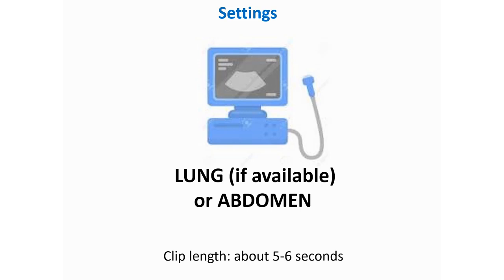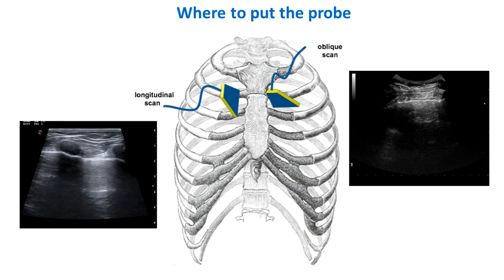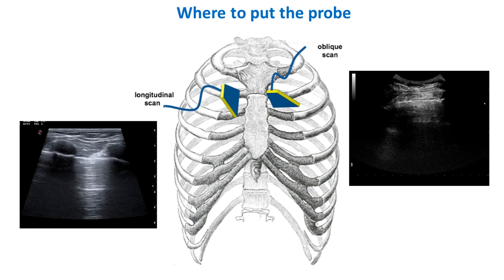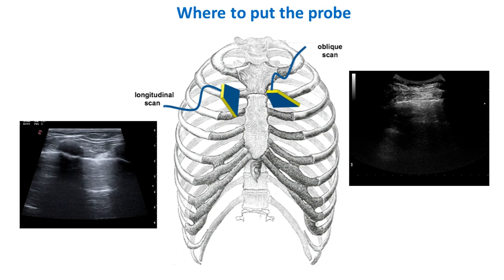You should scan each point for the duration of at least one complete respiratory cycle, possibly five to six seconds. The probe can be positioned in either a longitudinal manner, perpendicular to the ribs, or transverse, parallel to the ribs. In this video we will show the transverse approach, which avoids the interference of the ribs.